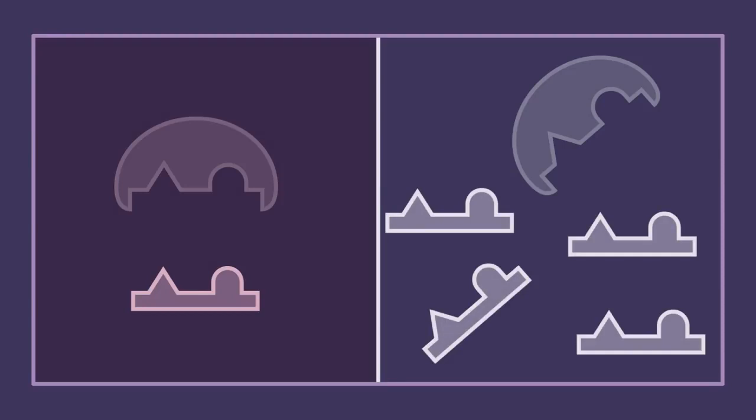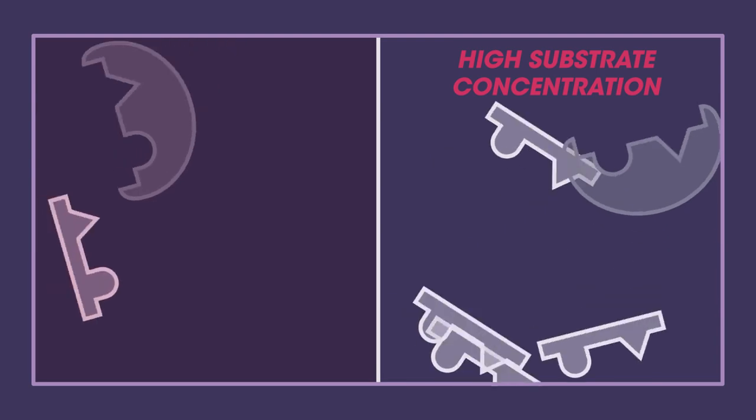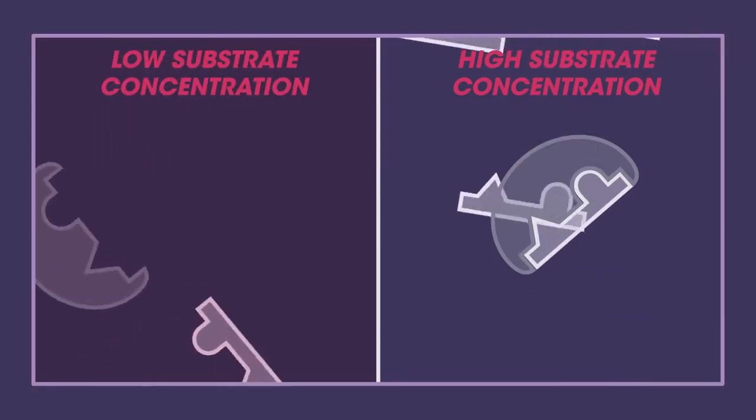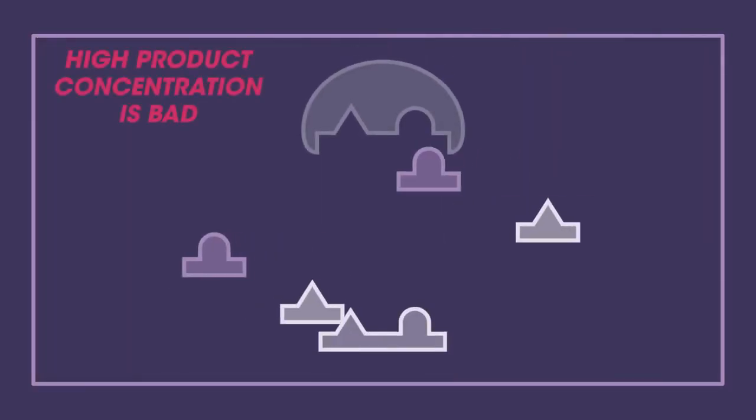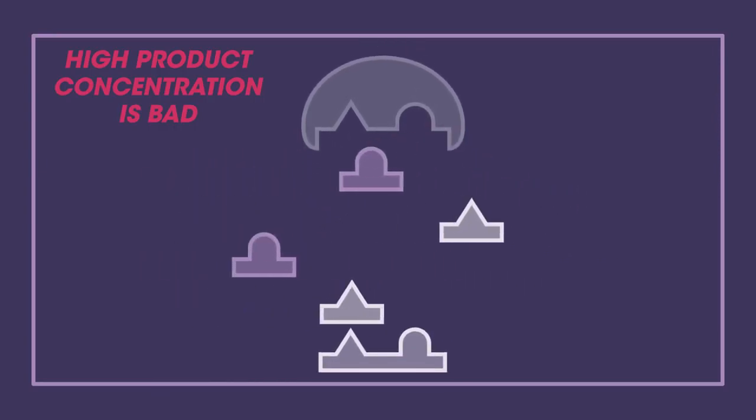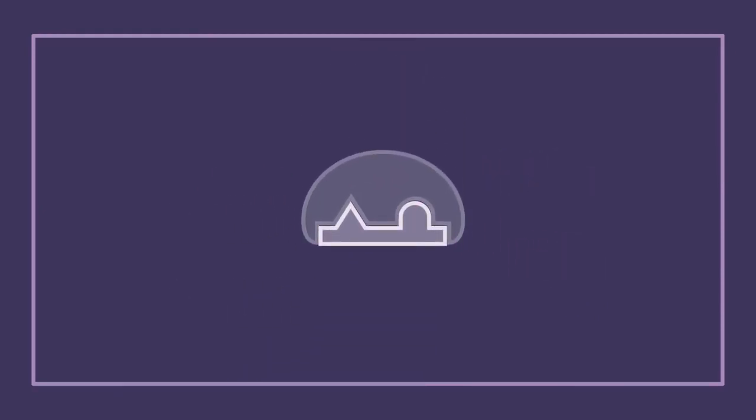Each enzyme has optimum conditions under which it works best. Firstly, there needs to be enough substrate around. They need a high enough substrate concentration for the reaction that they catalyze. If there is too little substrate, then the rate of reaction is slowed. Sometimes, if there is too much product around, then the reaction slows because the enzymes and substrates have less chance of bumping into each other. So, the product needs to be removed for a higher rate of reaction.